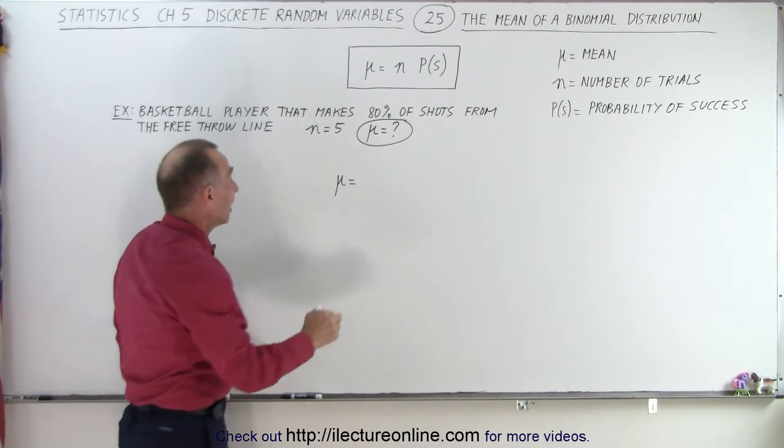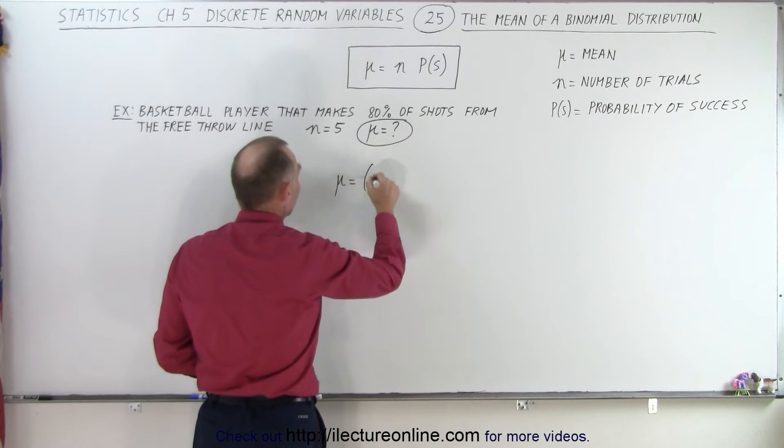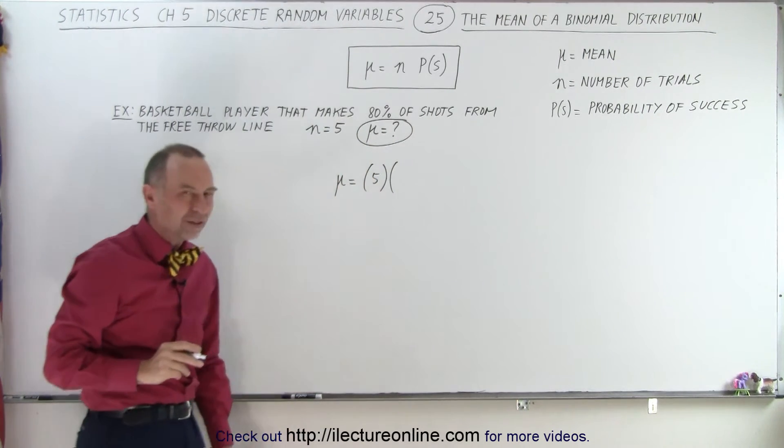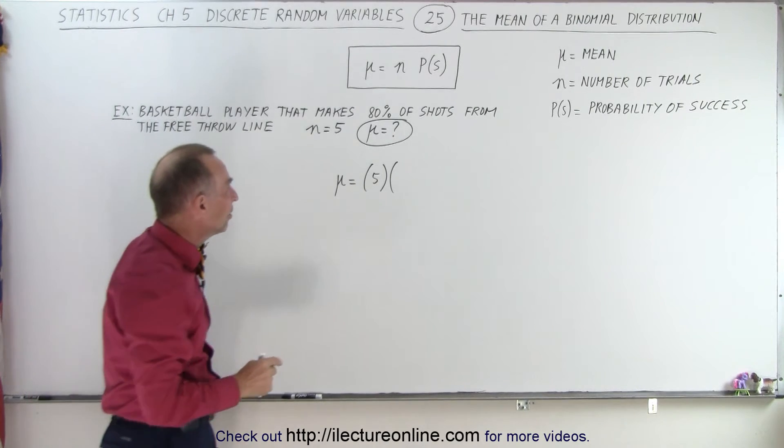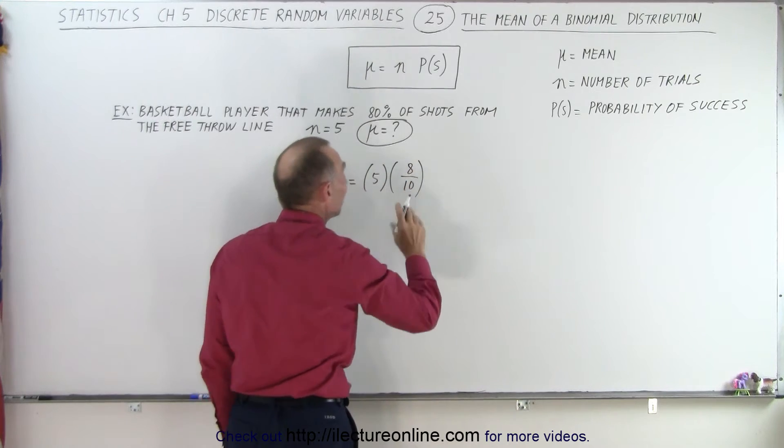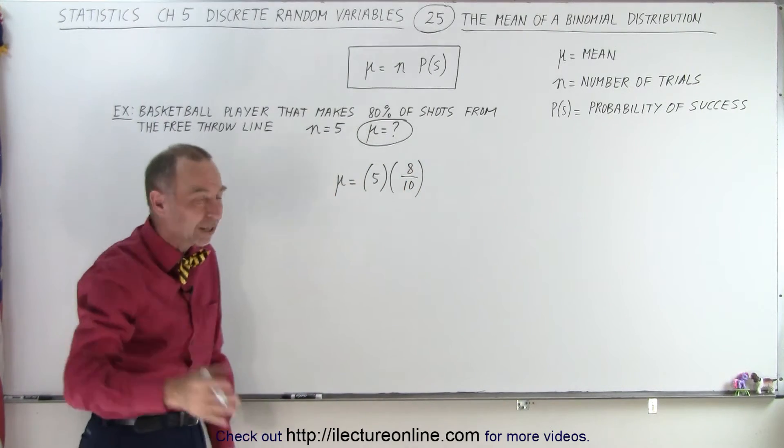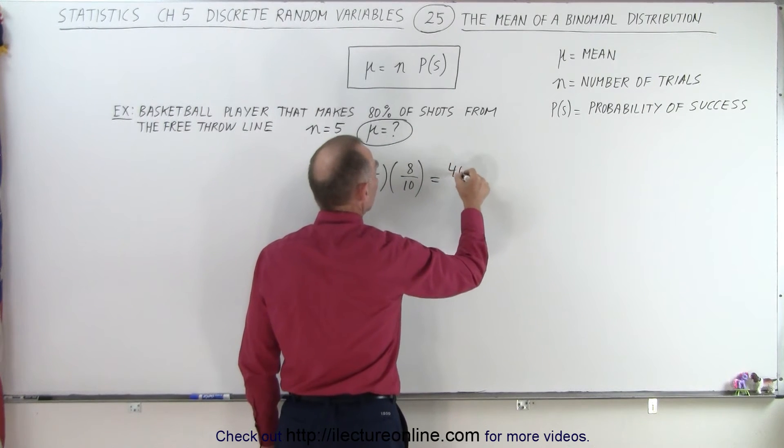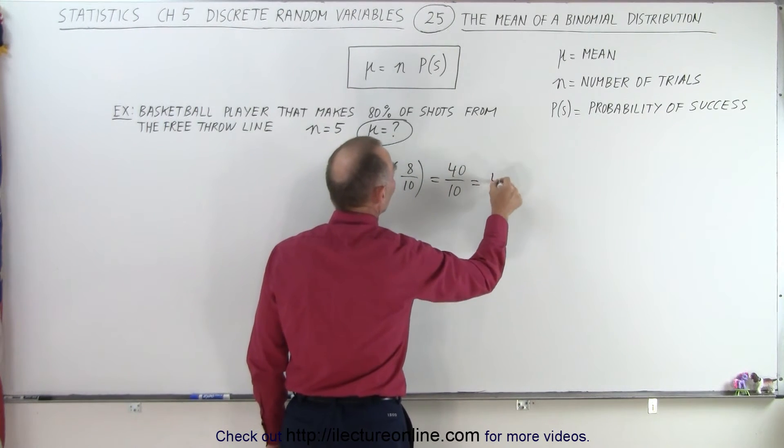In this case, the number of trials is 5. So we multiply 5 times the probability of success. The probability of success is 80%, which means he makes 8 out of 10 shots. So this equals 5 times 8/10, which is 40 divided by 10, or 4.